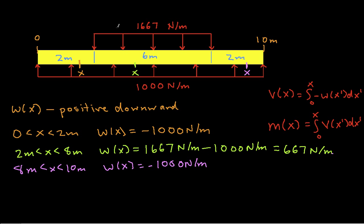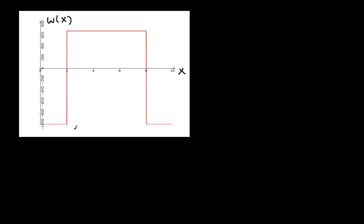So now we've got w(x) as a function of x. If we plot it: for x between 0 and 2, it's minus 1,000; for x between 2 and 8, it's 667; and for x between 8 and 10, it's minus 1,000 again.